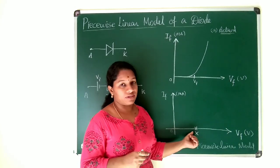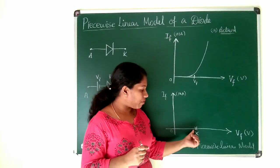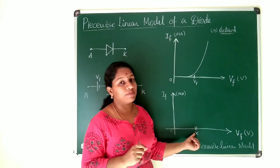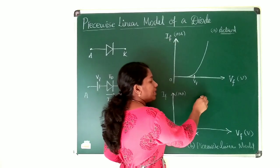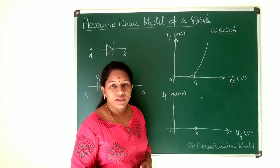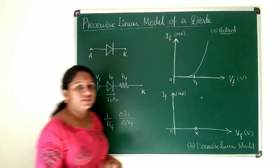For germanium, it is 0.3 volts. I've marked a point on the X-axis named X. To have a linear curve, I need a point Y. To get that, I use this concept.